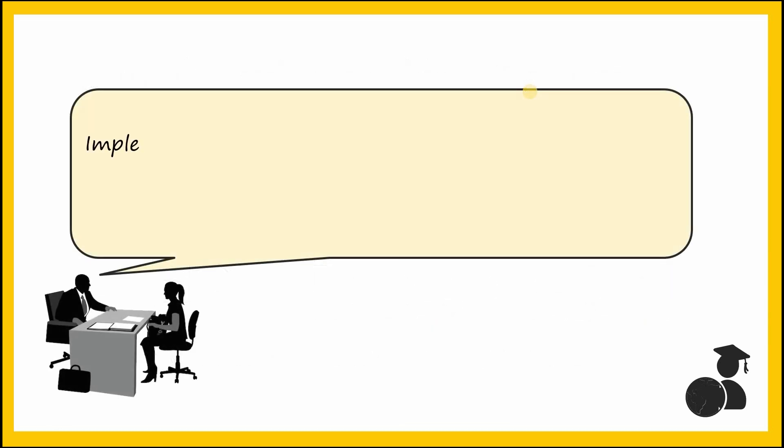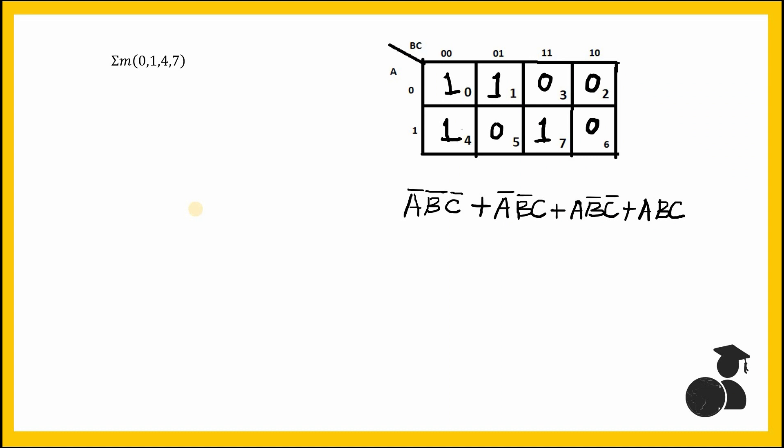Let's move on to the next question: implementing functions using decoders. Here let's implement a sum of product function of minterms 0, 1, 4, and 7, and a product of sum function with maxterms 2, 3, 6, and 7. Starting with our sum of product functions which had minterms 0, 1, 4, and 7, the K-map is as follows, and if you write the expression you would get this: 0, 1, 4, and 7.